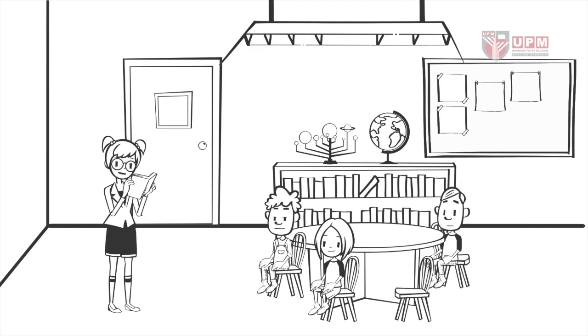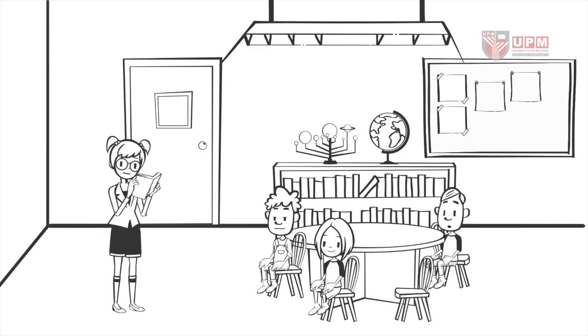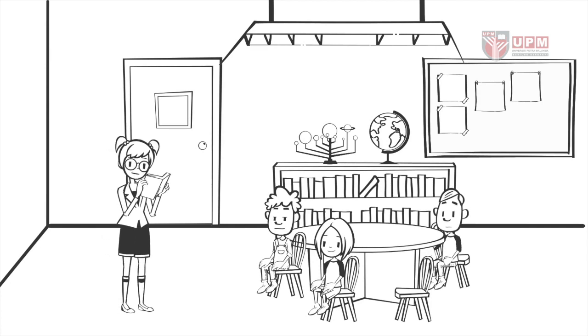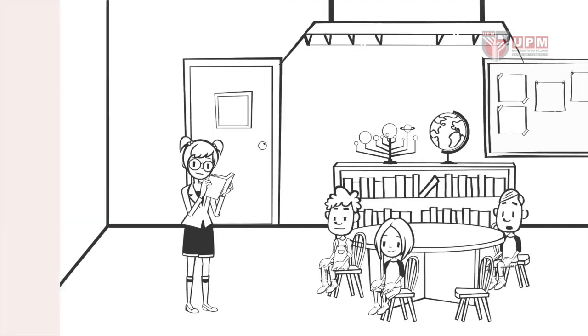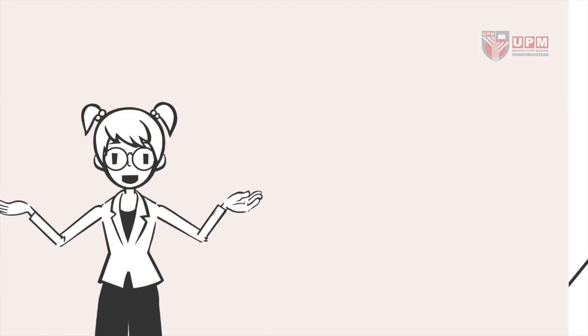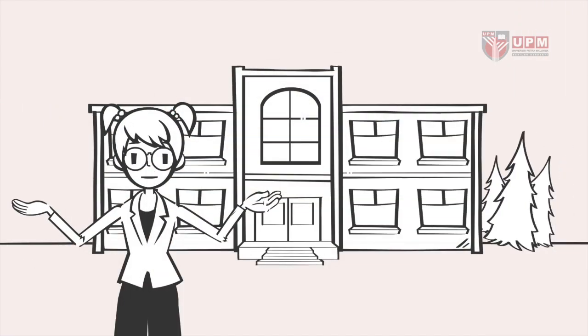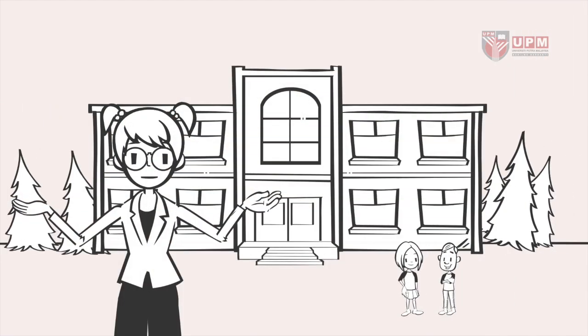When cytotoxic T cells attack, it involves the secretion of granzyme and perforin, which leads to apoptosis and perforation in the target cell. That's all about T cell response — I hope you will have a better understanding about T cell response. See you soon, bye!